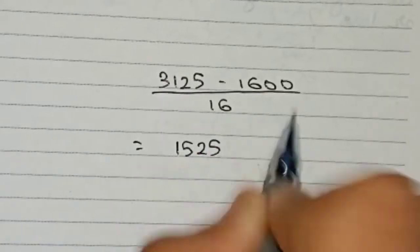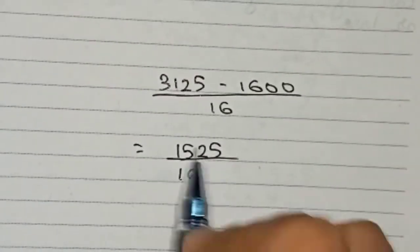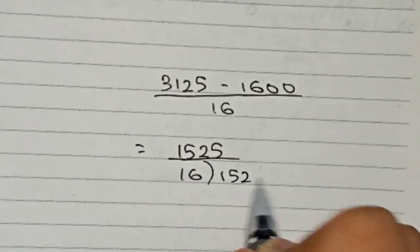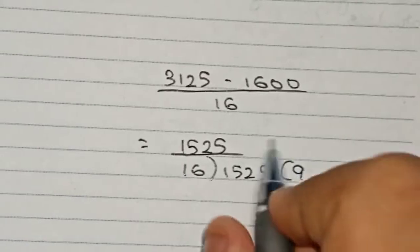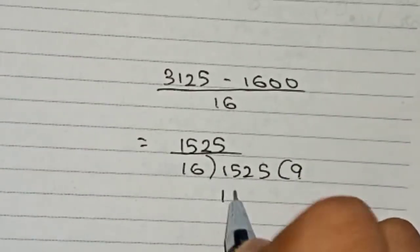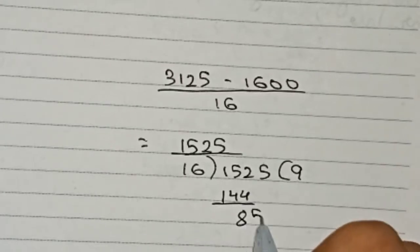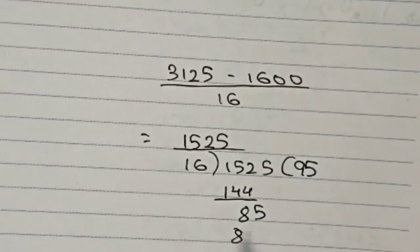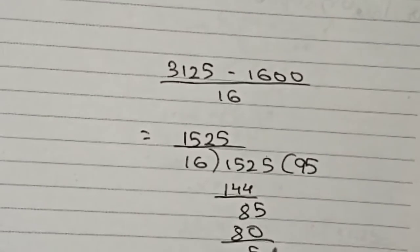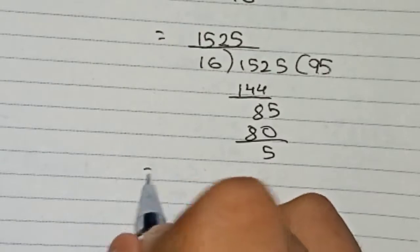Dividing 1525 by 16: 16 × 95 = 1520, remainder 5. Converting to mixed fraction: 95 and 5/16.